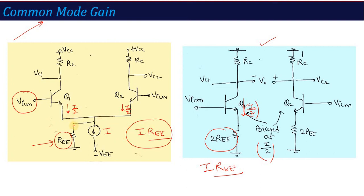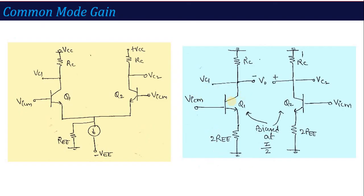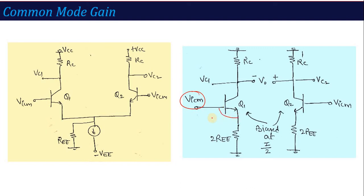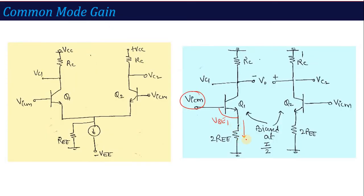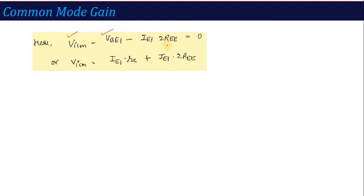Now we apply KVL to the input of the common mode half circuit. Applying KVL: VICM minus VBE1 minus IE1 into 2REE equals zero. This simplifies to VICM equals VBE1 plus IE1 into 2REE. Now, what is VBE1? VBE voltage is nothing but IE into re, where re is the internal resistance equal to 26 millivolt divided by IE. So VBE1 equals IE1 into re. And the base resistance term is IB1 into re, where IB1 is written in terms of beta: the term becomes beta times re.